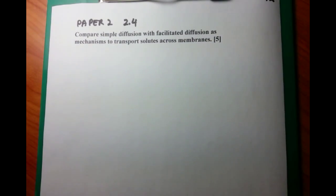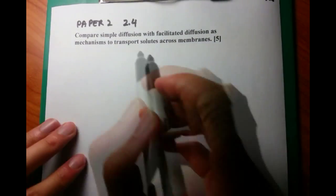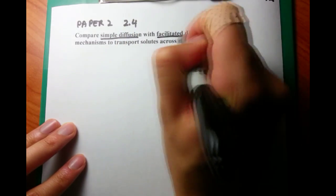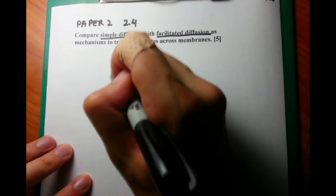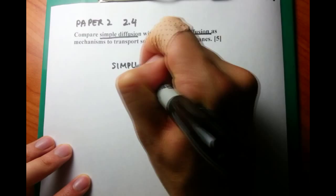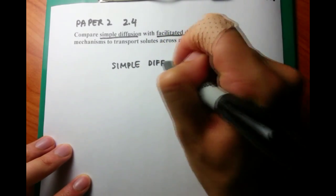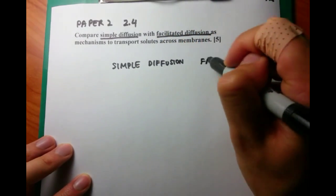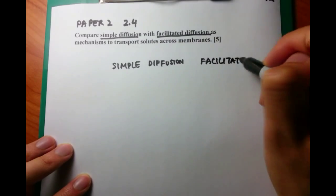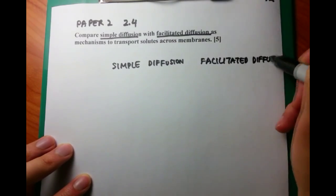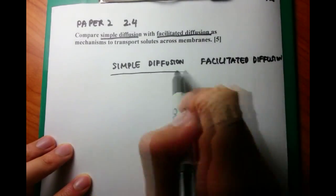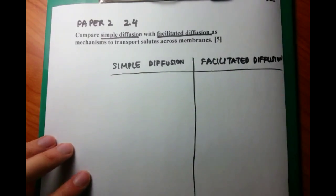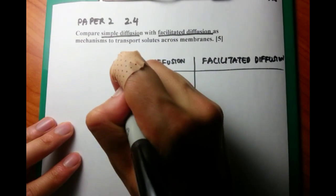Compare simple diffusion with facilitated diffusion as mechanisms to transport solutes across membranes. A wordy question, but it's a simple compare question. Every time you see compare, I want you to put the two things that you're going to compare, two, three, four things, and put it across on a table. So in this case, we're going to put simple diffusion on the left and facilitated diffusion on the right.